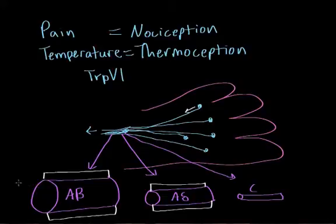The A-beta fibers have the highest conduction velocity, so they're very fast. The A-delta fibers are a little bit slower, so they're medium speed. And the C fibers are very slow.